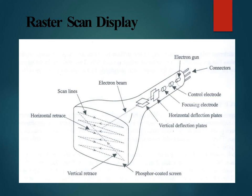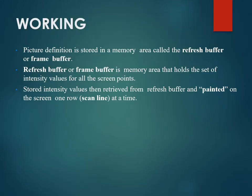The picture is redrawn by directing the electron beam back over the same screen points quickly. Picture definition is stored in a memory area called the refresh buffer or frame buffer. The frame buffer holds the set of intensity values for all screen points. These stored intensity values are then retrieved from the refresh buffer and painted on the screen one row at a time.